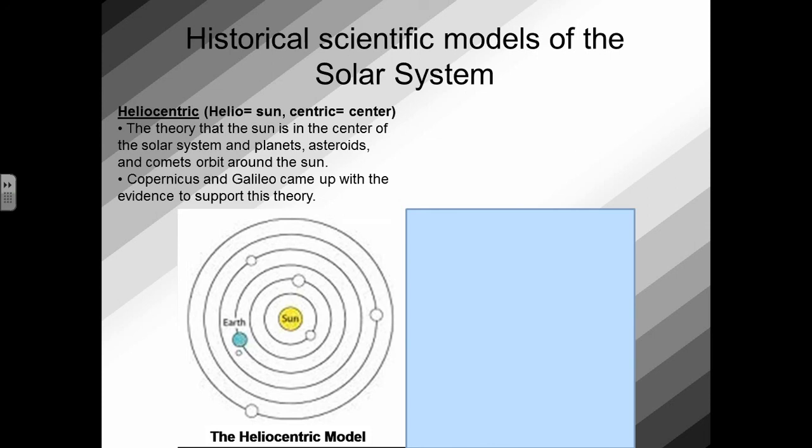This is the theory that the sun is in the center of the solar system, and the planets, asteroids, and comets orbit around the sun. The scientists that came up with the evidence to support this theory is Copernicus and Galileo.